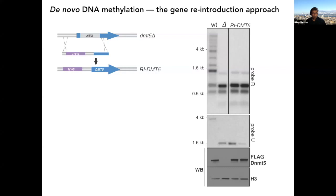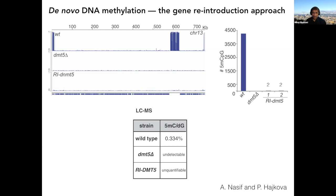To rule out a flag-tagged artifact, we knocked out the catalytic region and then restored it with a different marker — a reintroduced DNMT5 (RI DNMT5). The reintroduced allele is expressed, but methylation does not return. Bisulfite sequencing on chromosome 13 shows no restoration of DNA methylation. Genome-wide, we can occasionally see an extremely rare de novo site — two independent reintroduced strains each show a couple of sites.